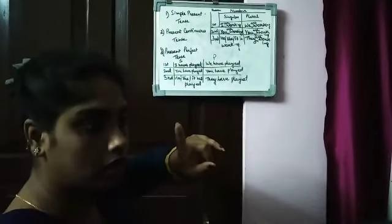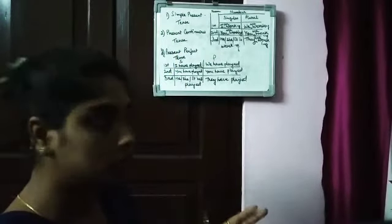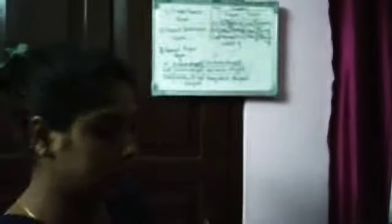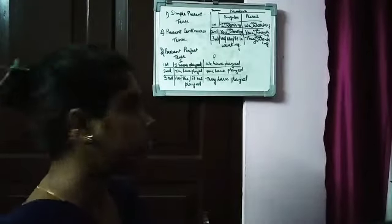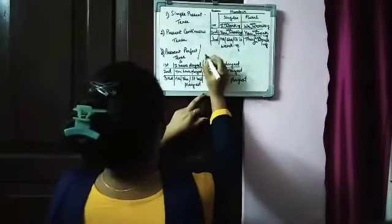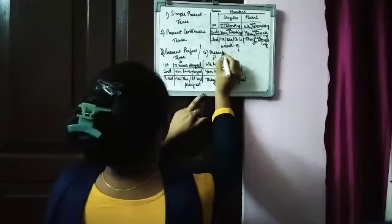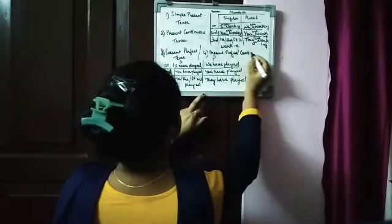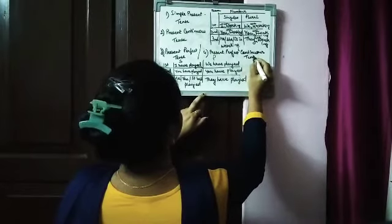No, we have not. That means we have finished simple present tense - 'been' is not used there. We have used present continuous tense - again it is not used there. And we have used present perfect tense also - it is not used there. So the last type or subdivision which is remaining is present perfect continuous tense.